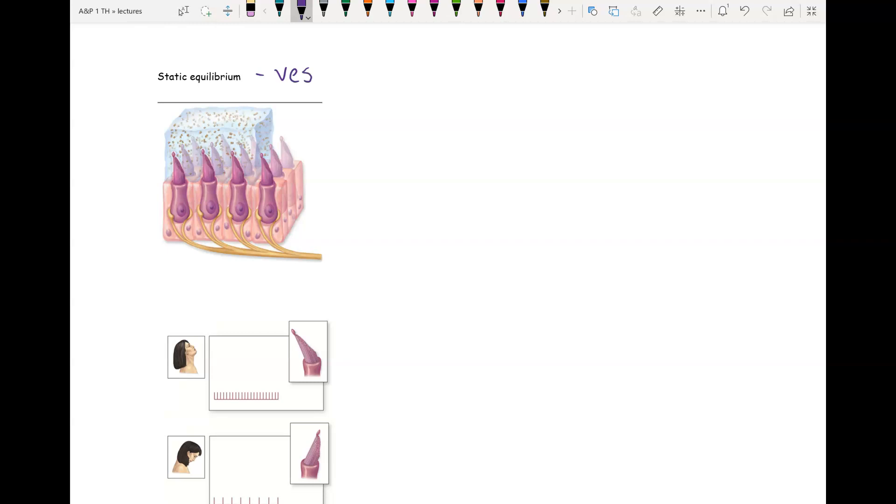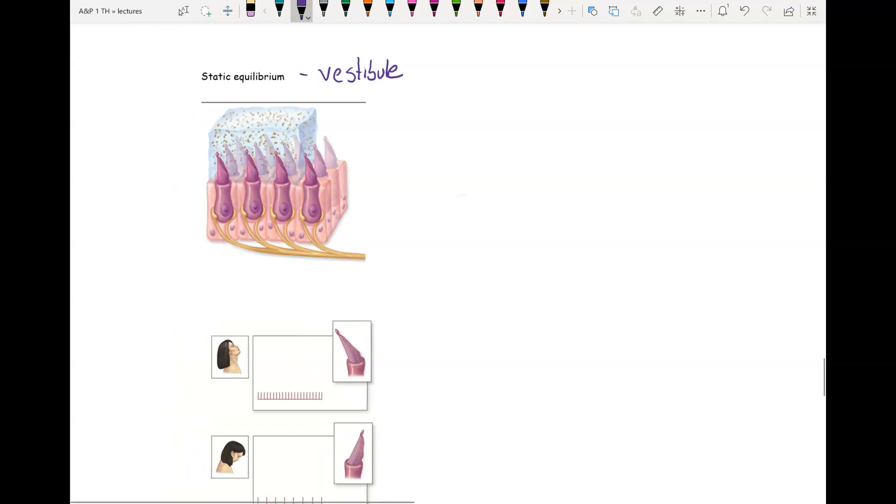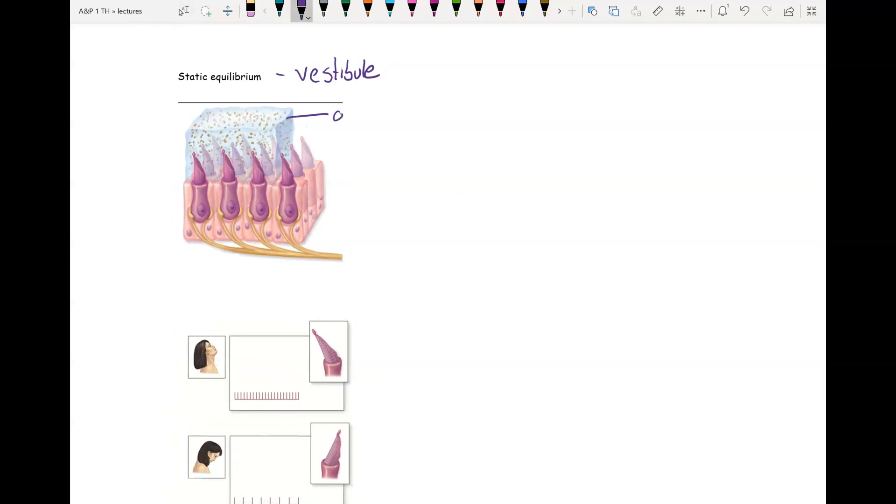We'll look at static equilibrium first. This occurs in the vestibule. Inside the vestibule you have this membrane called the otolithic membrane. Think of it kind of like a jello jiggler. All the little dots you see inside there are otoliths. Oto refers to ear and lith means stone. So this literally means ear stones. These are tiny little stones made of calcium.